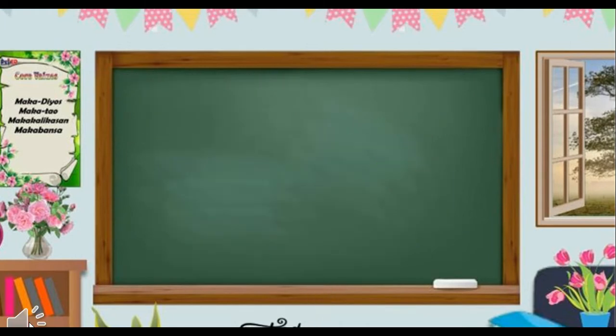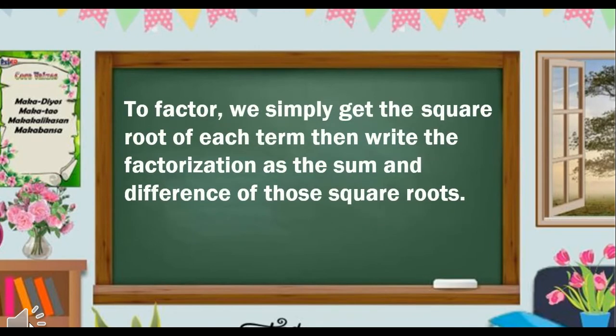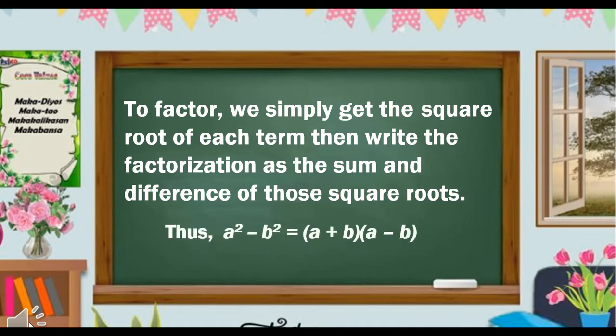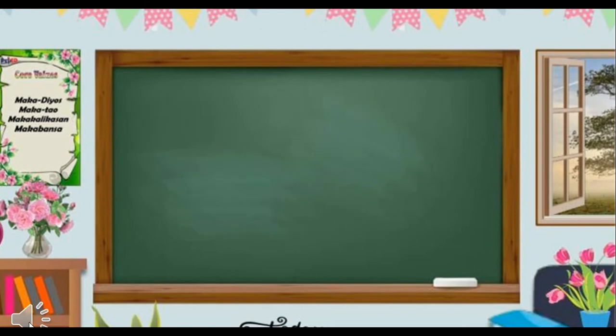To factor, we simply get the square root of each term, then write the factorization as the sum and difference of those square roots. Thus, a squared minus b squared is equal to (a plus b) times (a minus b).